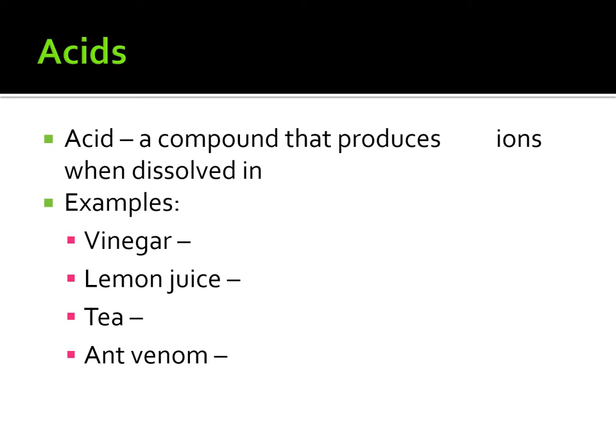We're going to start by listing properties of acids first. I would suggest either a bulleted list or a numbered list of properties. First, acids are compounds that produce hydrogen ions when dissolved in water. I would suggest putting a bullet point underneath acids and writing down: produces hydrogen ions when dissolved in water.